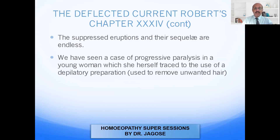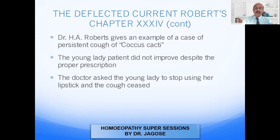Robert gave the example of a case of progressive paralysis in a young woman traceable to the use of a depilatory preparation — used to remove unwanted hair from the body. He also gave the example of a case of persistent cough of Coccus cacti: the young lady patient did not improve despite a proper prescription. The doctor asked the young lady to stop using her lipstick and the cough ceased. This was an obstacle to cure — the current was deflected.